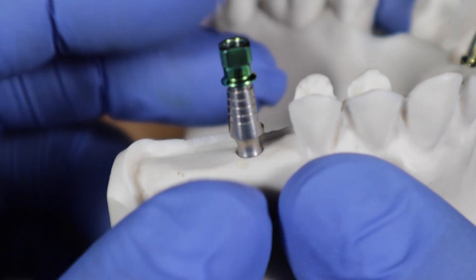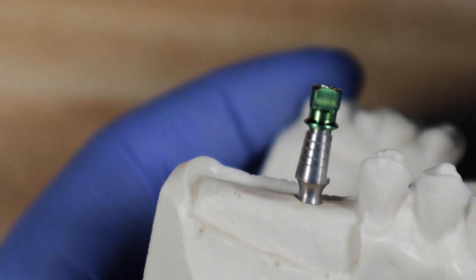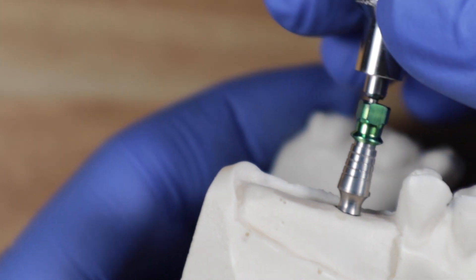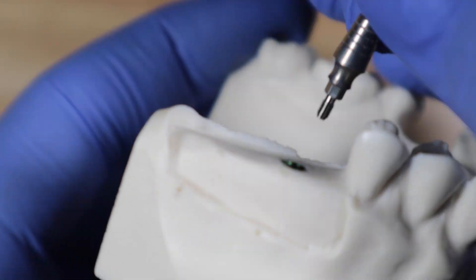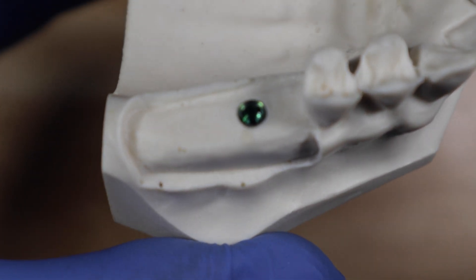Once you confirm that it's all the way down, then you can go ahead and take the transfer off. So you just take the transfer off with your little hand driver. And then you confirm that your implant is all the way down.